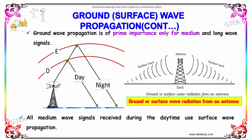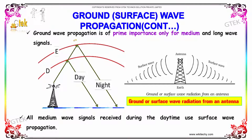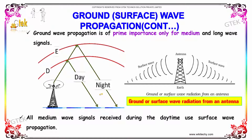Ground wave propagation is of prime importance only for medium and long wave signals. All medium wave signals received during the daytime use surface wave propagation.